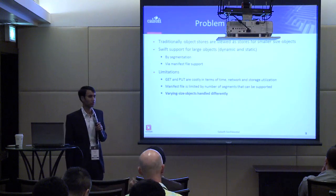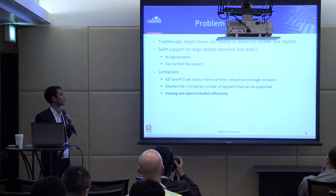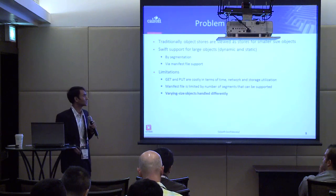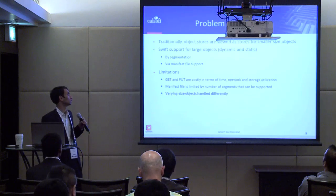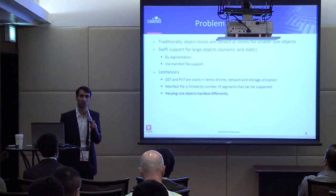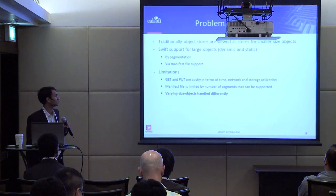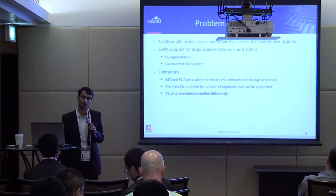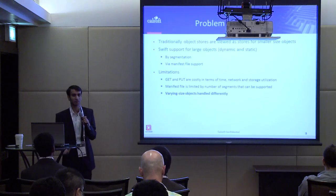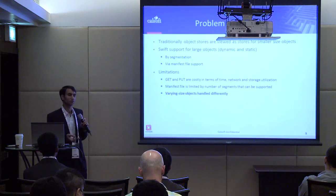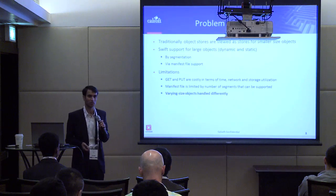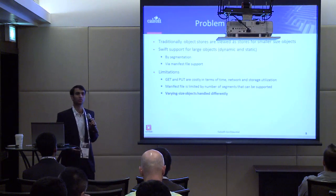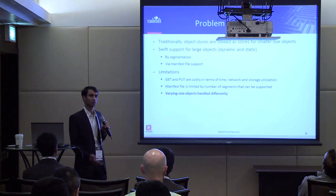The problem statement: traditionally, an object store has been viewed as a store for smaller-sized objects. Having said that, Swift does support large objects — dynamic large objects and static large objects — by segmentation via a manifest file. The manifest file is the root file to the large object, storing all segment-related information. You hit the manifest file, get all the segment information, and then access those particular segments to execute a GET or PUT request.